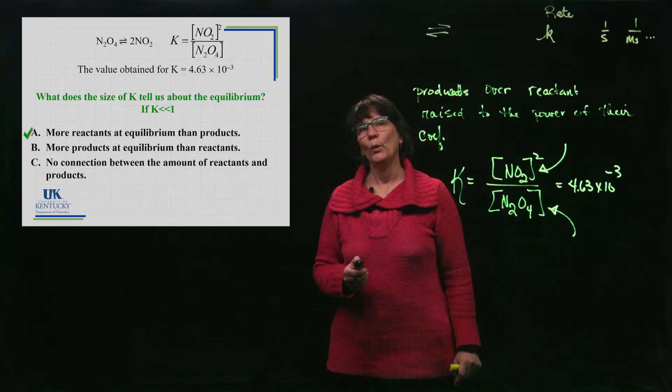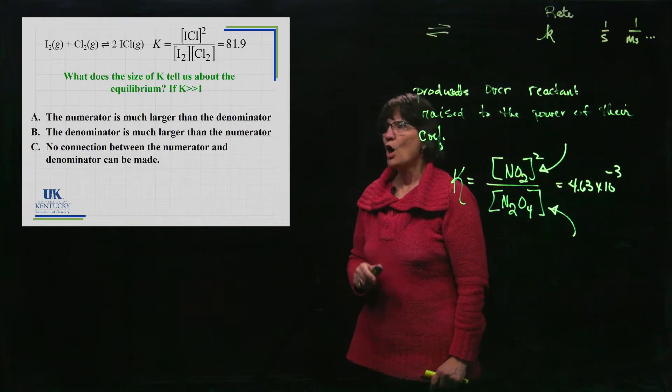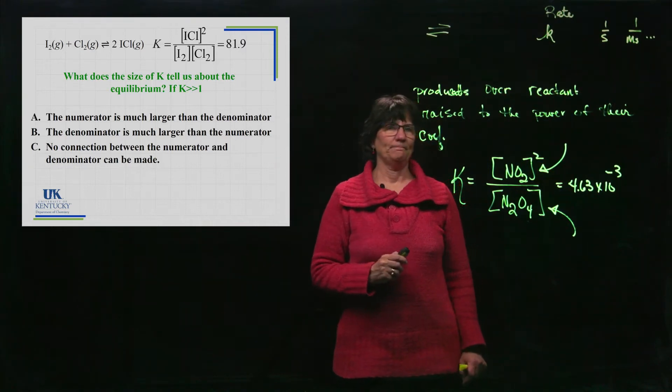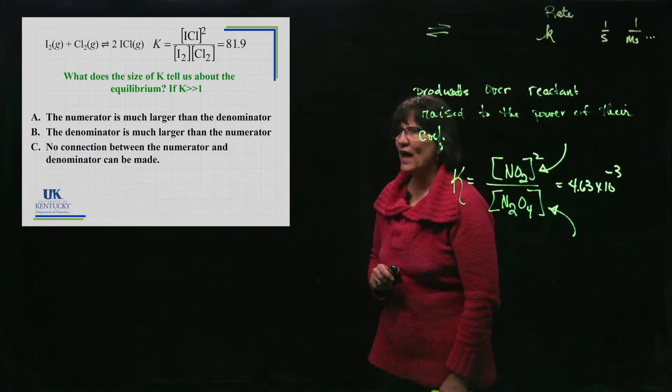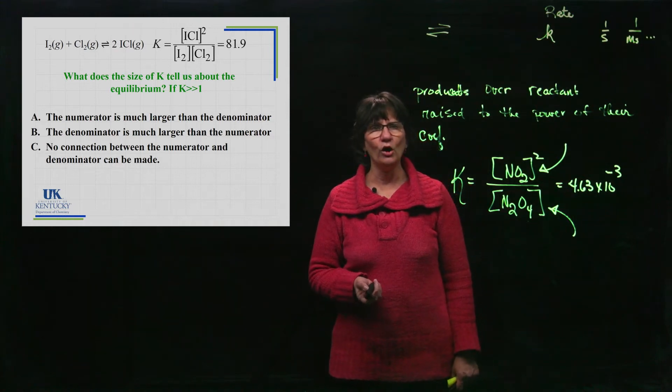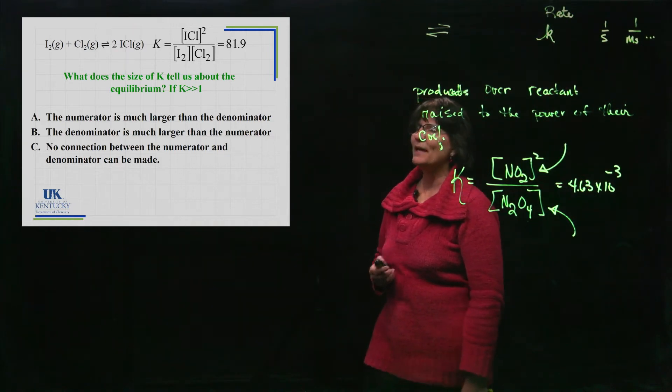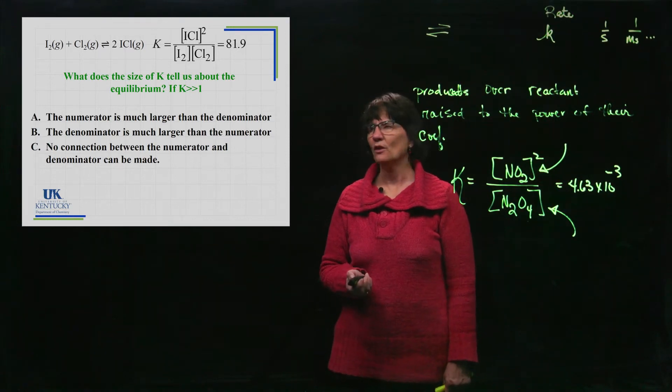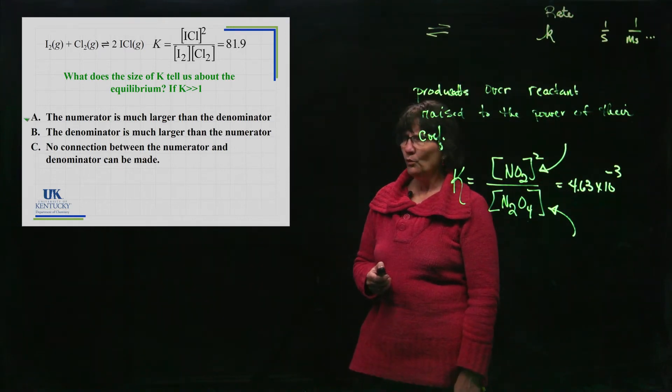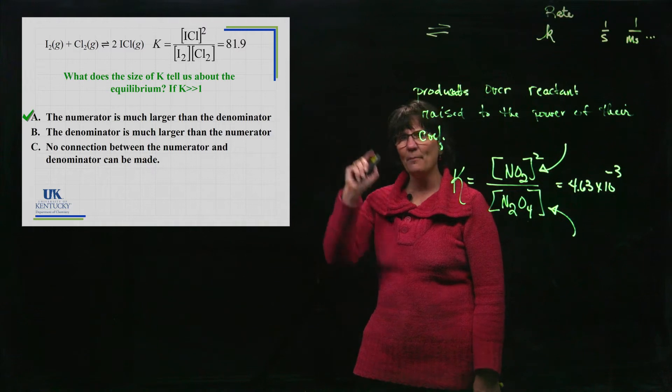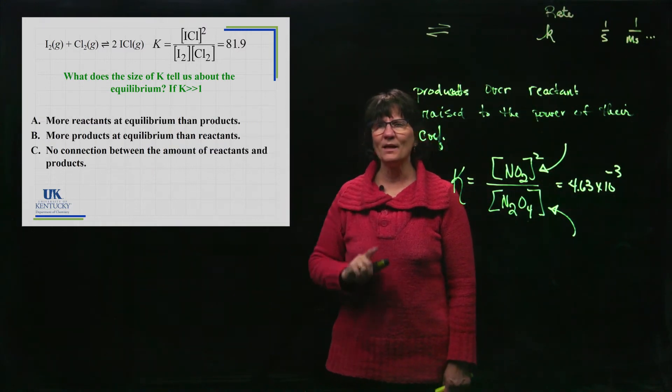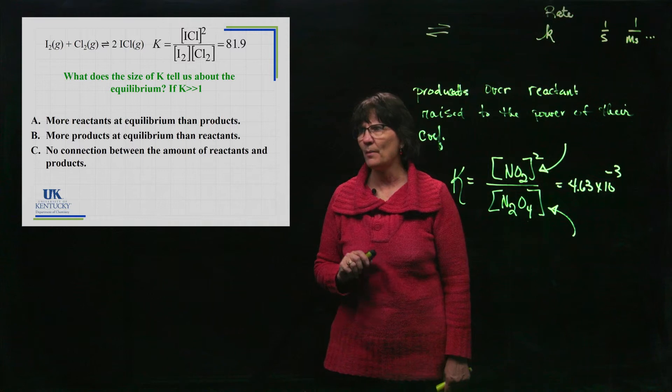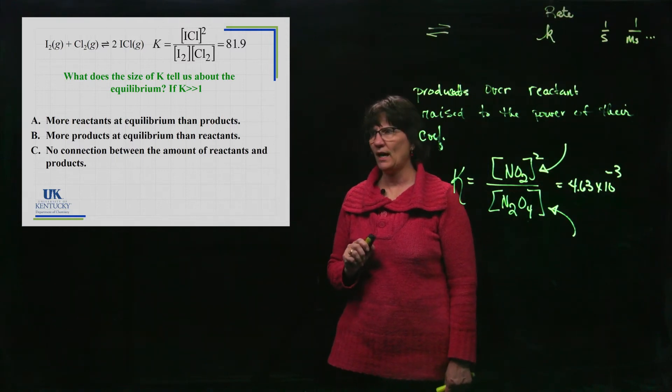Here's a different reaction. Look at that reaction and look at the value of K. It's not small, it's large, it is bigger than one. So which one of those statements has to be true when K is large? Well certainly when K is large the top has to be big. What sits up there at the top? Which one of those things sits at the top? What can you say about a large K?